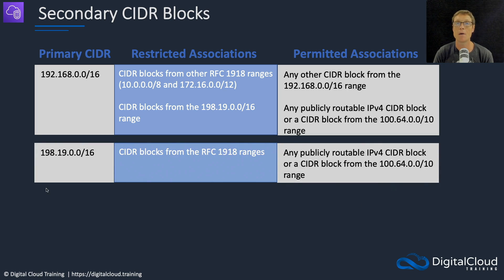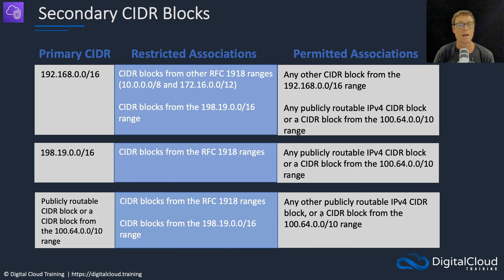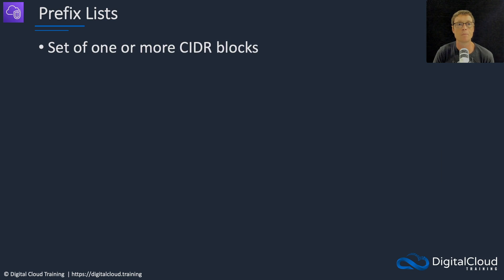If the primary CIDR block is from a public address space - non-RFC 1918 - you can have CIDR blocks from RFC 1918 ranges without other restrictions, plus any publicly routable IPv4 CIDR block or the 100.64/10 range. If you have a publicly routable CIDR block or one from the 100.64/10 range, the restricted associations are RFC 1918 ranges and 198.19/16. You can then have any other publicly routable IPv4 CIDR block or 100.64/10. You don't need to memorize every detail - just remember the basic patterns, and you'll be okay for the exam.